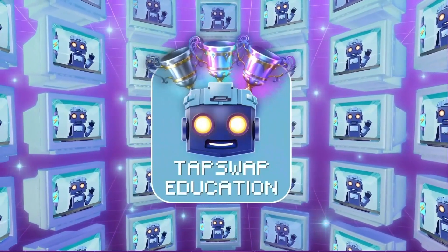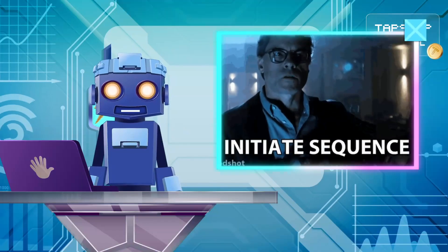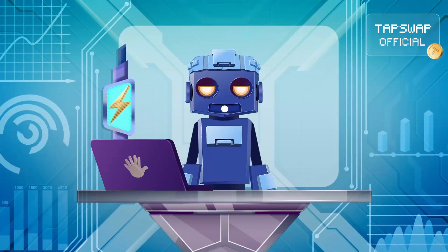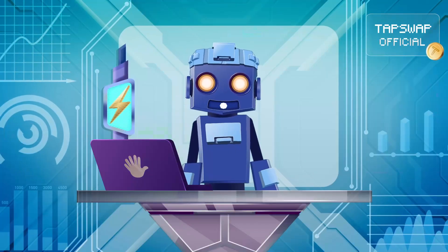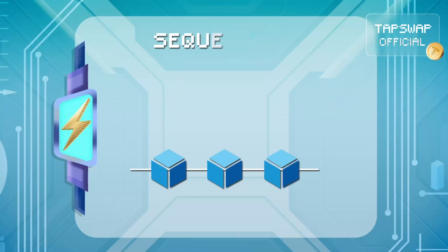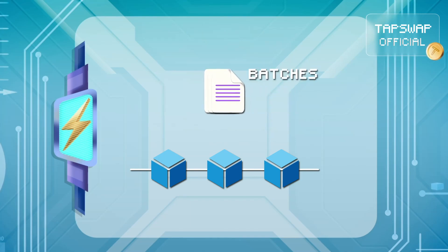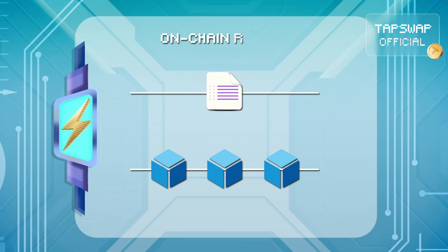The first step is sequencing transactions. Operators called sequencers collect transactions from users, process them off-chain, and bundle them into batches. These batches are submitted to the on-chain rollup smart contract.